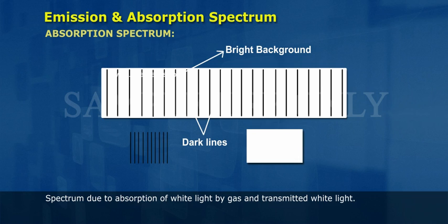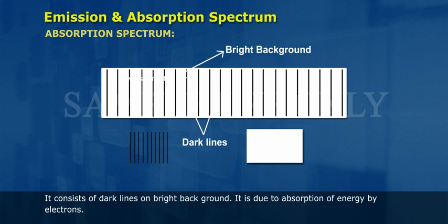Absorption Spectrum. Spectrum due to absorption of white light by gas and transmitted white light. It consists of dark lines on bright background. It is due to absorption of energy by electrons.